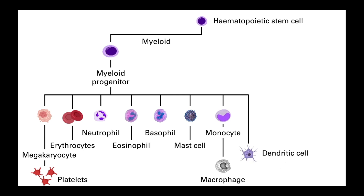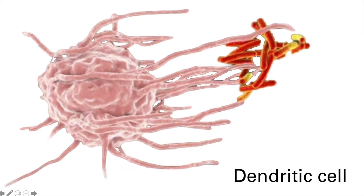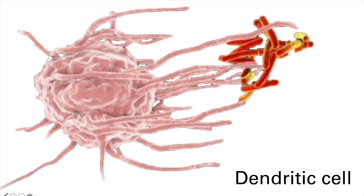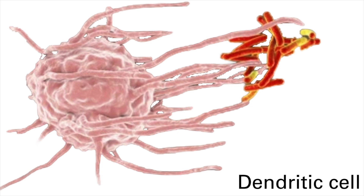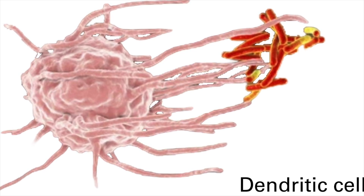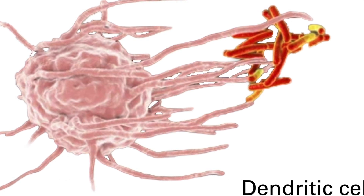Lastly, myeloid progenitors can produce dendritic cells, but just to confuse matters, these can also be derived from lymphoid progenitors, and a small subset of dendritic cells also form from monocytes, but we will describe the main functions of dendritic cells as if they were one population. Dendritic cells are also capable of phagocytosis, but rather than for the purpose of pathogen clearance, dendritic cells engulf pathogens to be able to present part of the pathogen on their surface and then activate cells of the adaptive immune system, acting a bit like a messenger or a link between the innate and adaptive arms of the immune system.